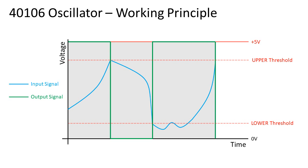This also shows why the Schmitt trigger is inverting. When the input is high, the output is low and vice versa.